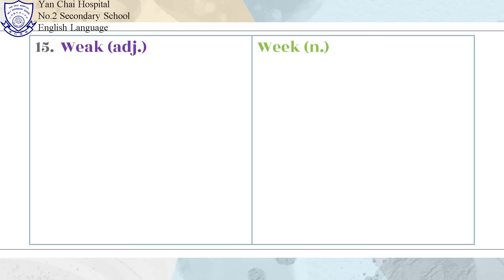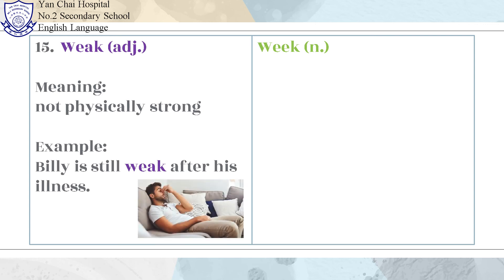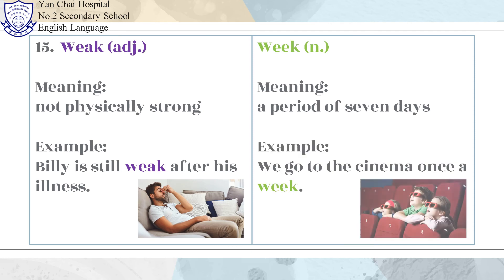Number 15: Weak and Week. Weak means not physically strong. Example: Billy is still weak after his illness. Week means a period of seven days. Example: We go to the cinema once a week.